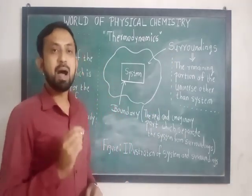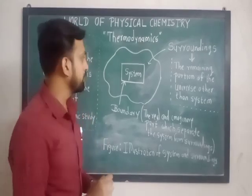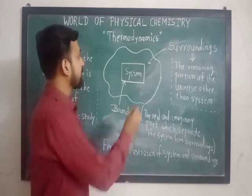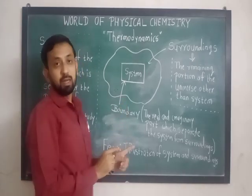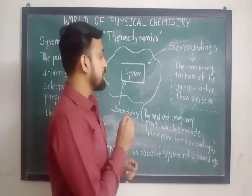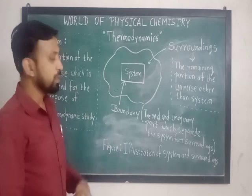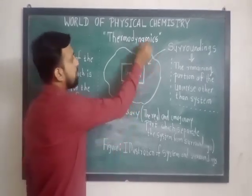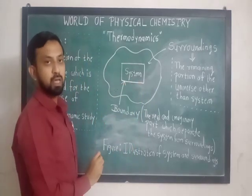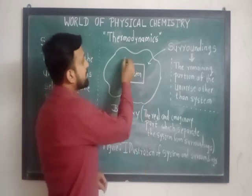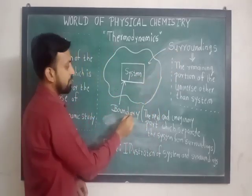Now the question arises: which part separates the system from the surroundings? The answer is simple — it is the boundary. The boundary may be real or imaginary; that is, the surface or part, real or imaginary, which separates the system from the surrounding is called as a boundary. As shown in the figure, a particular portion of the universe is selected for thermodynamic study as the system, while the rest is the surroundings, and both are separated by a boundary.